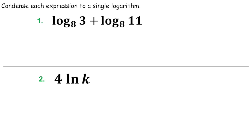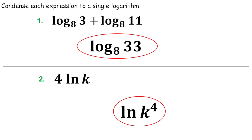Now we're going to condense these — it's kind of the opposite. You're going to move those two together. In order to condense them, they have to have the same base, which they do. All we did is take the four that was way out in front and move it into our exponent — and that's it.